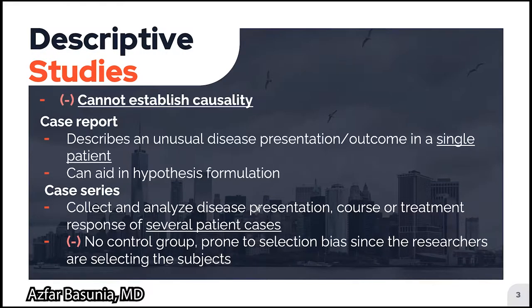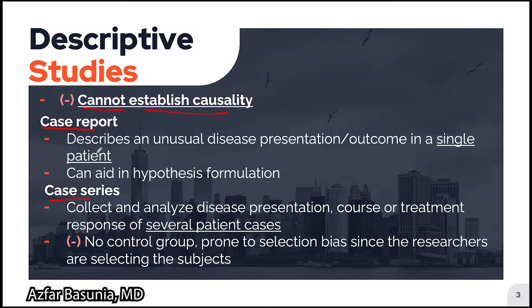Let's start by talking about descriptive studies. The most high-yield drawback you need to know about descriptive studies is that they cannot be used to establish causality. We will talk more about some ways of establishing causality in a future video. Two prominent examples of descriptive studies include case reports and case series. A case report describes an unusual presentation or outcome in a single patient. They are primarily used to formulate hypotheses and design future studies.